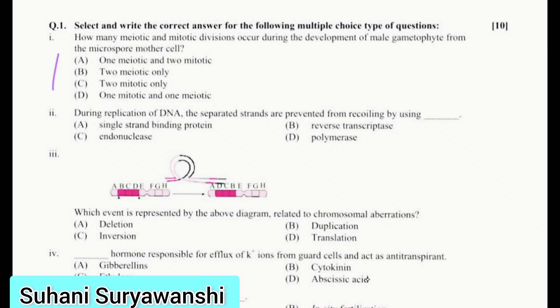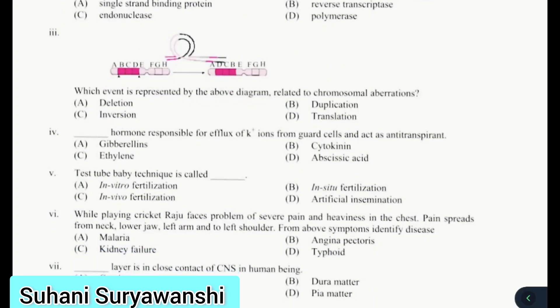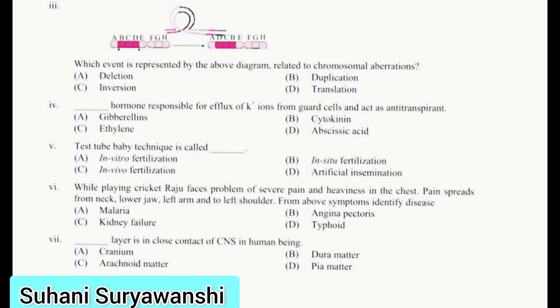Which event is represented by the above diagram related to chromosomal aberration? The diagram shows inversion. Next, which hormone is responsible for efflux of K+ ions from guard cells and acts as antitranspirant? Answer is abscisic acid. Test tube baby technique is called in vitro fertilization.